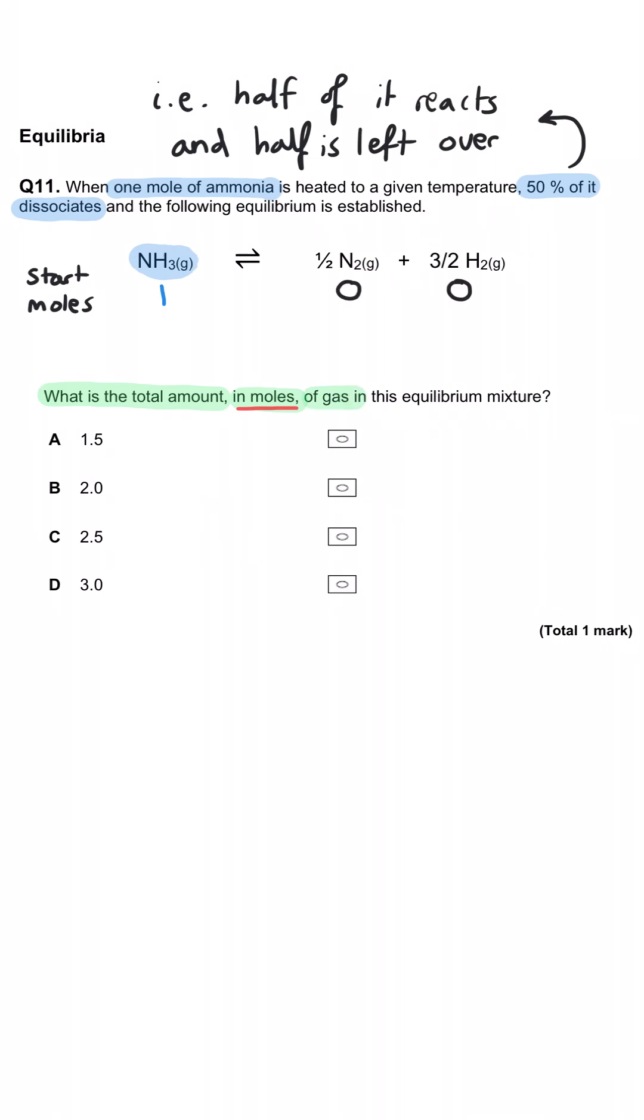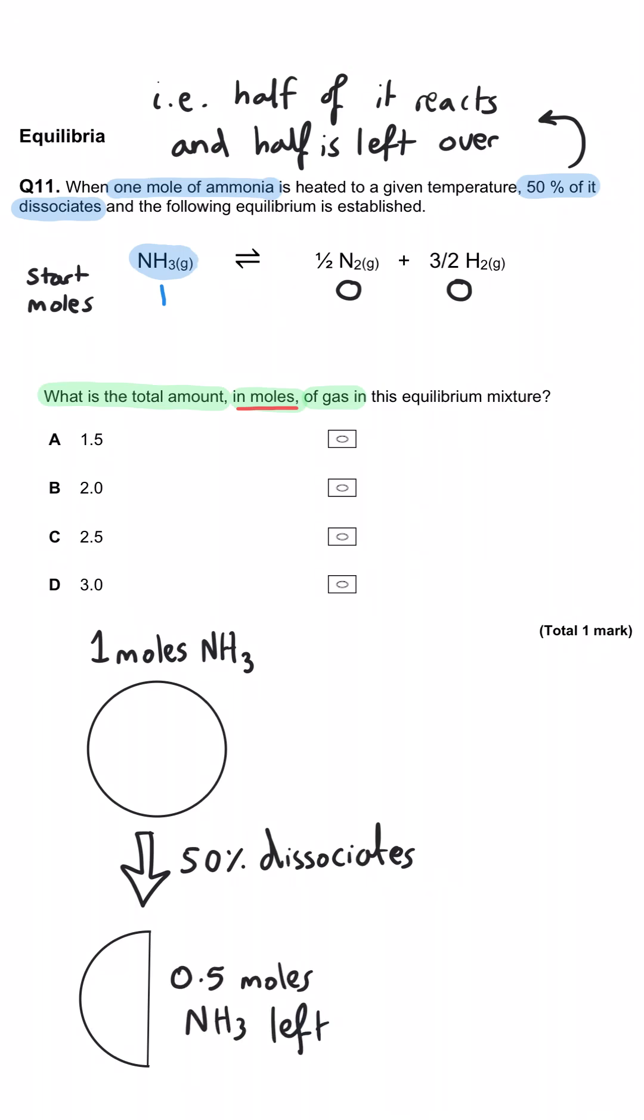Well, importantly we start with one mole of ammonia. If 50% of it dissociates, that means at equilibrium we've gone down to 0.5 moles of ammonia.